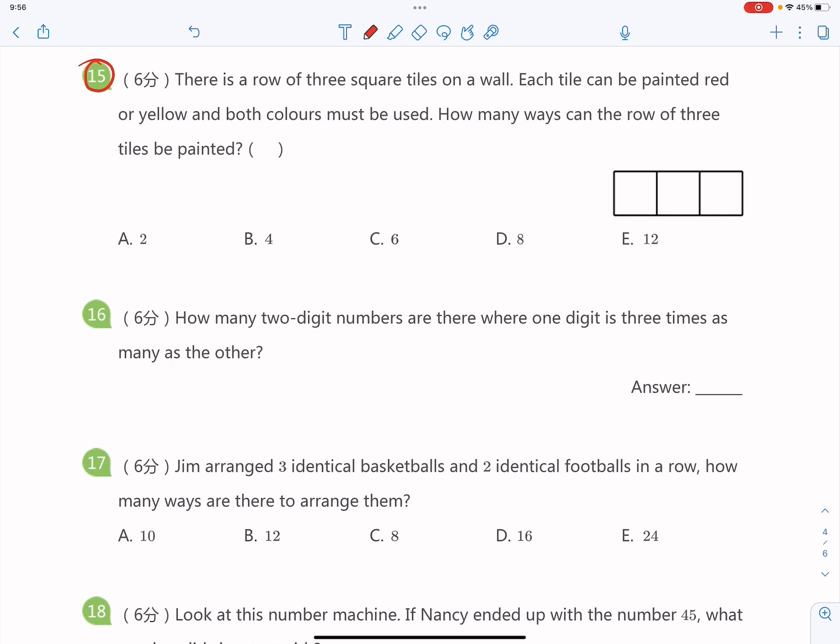Let's see, since both of the colors must be used, we can have two red and one yellow, because we got three tiles, or you could have two yellow and one red.